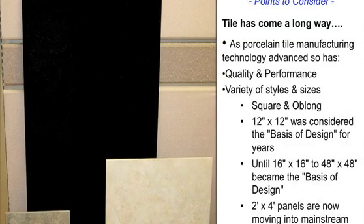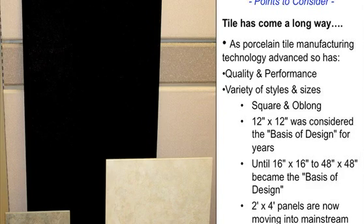Porcelain — the tile of choice. In the last 15 years, porcelain has just grown enormously in usage compared to when I started in the industry, when we were looking at typically red-bodied tile — a very soft type of product. There's the quality, the performance, a variety of styles and sizes. Years ago, a 12×12 was considered large format. Now 16×16 is average, and we're seeing 48×48. I've even worked on projects where we installed 5-foot by 10-foot panels of porcelain on the floor. That really gets into large format and opens up a lot of different installation problems.